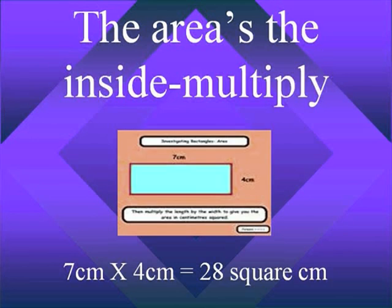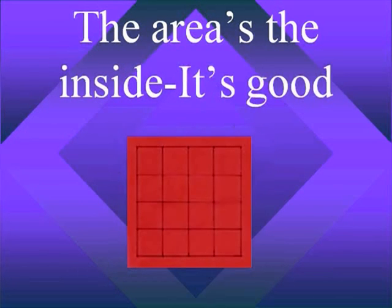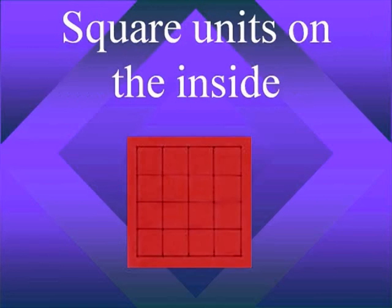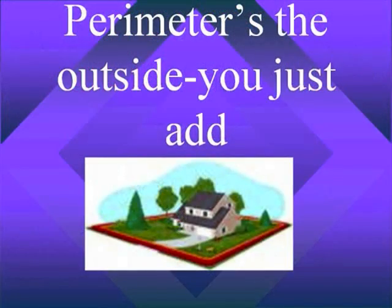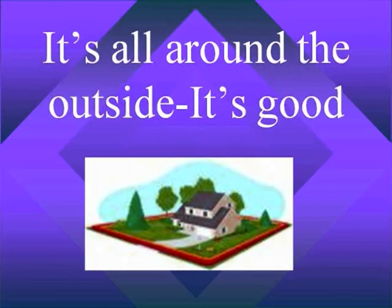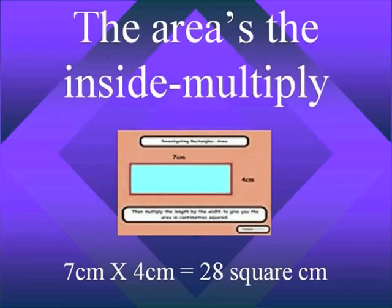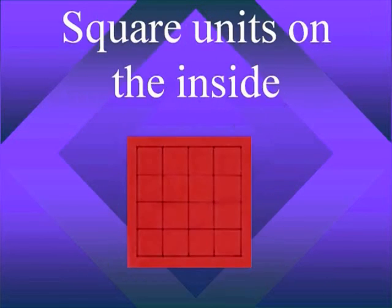The area's the inside — square units on the inside. Perimeter's the outside, you just add, it's all around the outside. The area's the inside — square units on the inside. Let's apply!